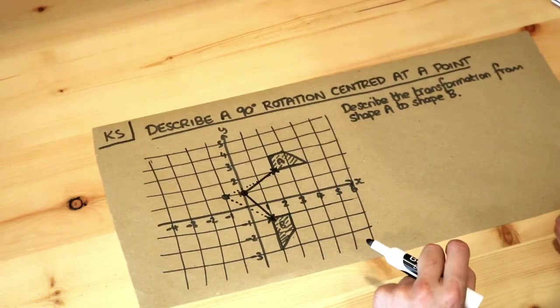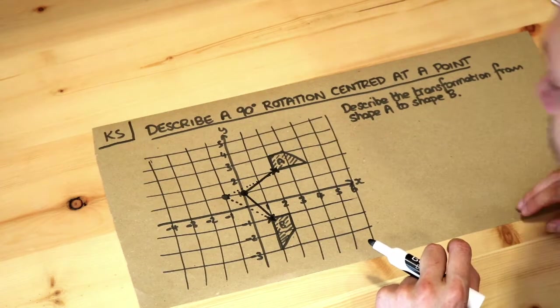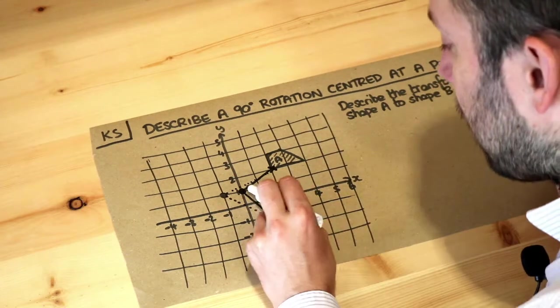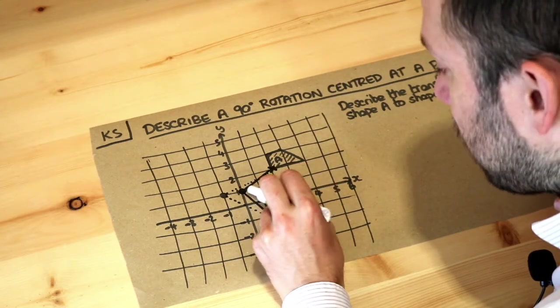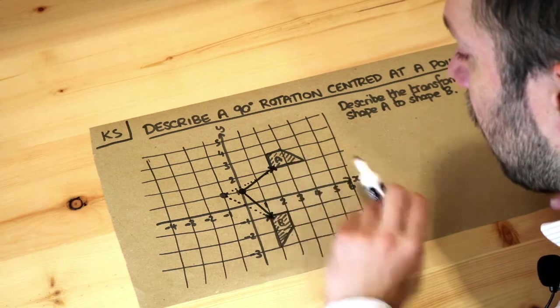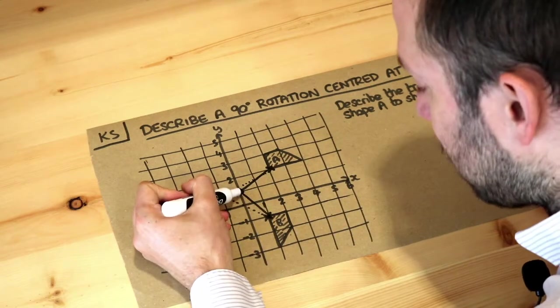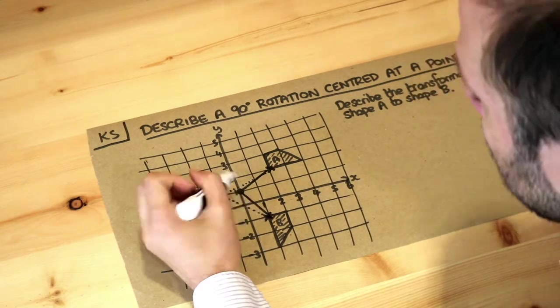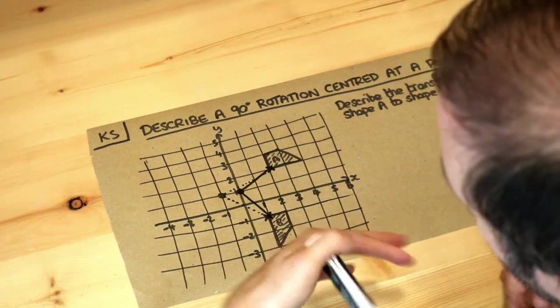Now this does look kind of like 90 degrees, and the way we can check is, can you see that to get from here to here, that's two squares right and one square up, whereas to get from here to here it's two squares down and one across.